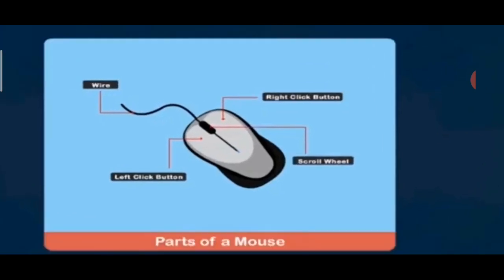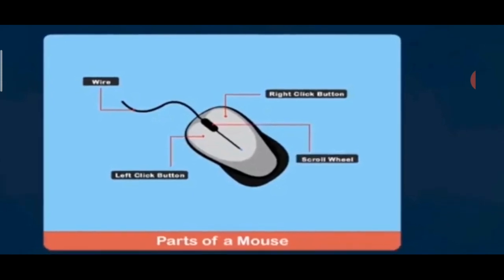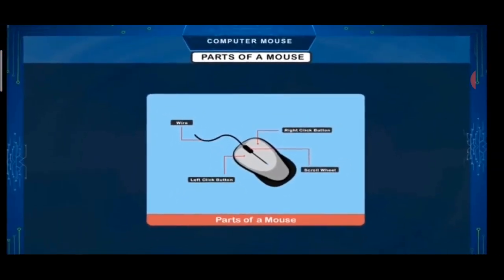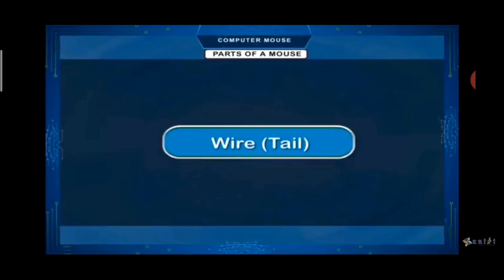One more thing — at the middle of the 2 buttons, we have a scroll wheel. The scroll wheel is used to scroll your page up and down. There are 4 parts of a mouse: wire, left mouse button, right mouse button, and a scroll wheel. It is also having a mouse pad where we keep our mouse.